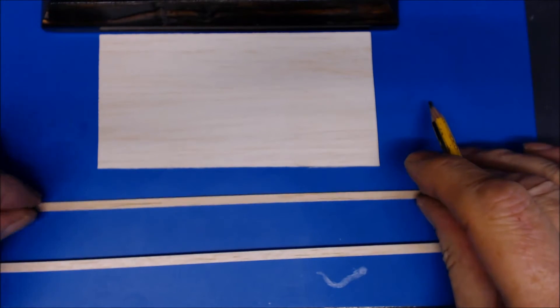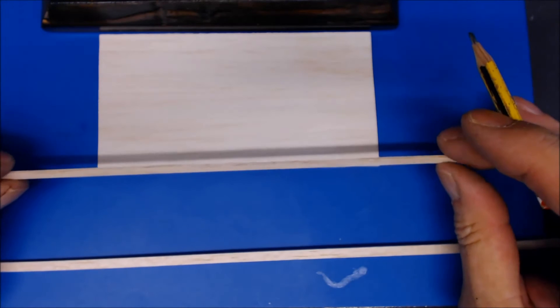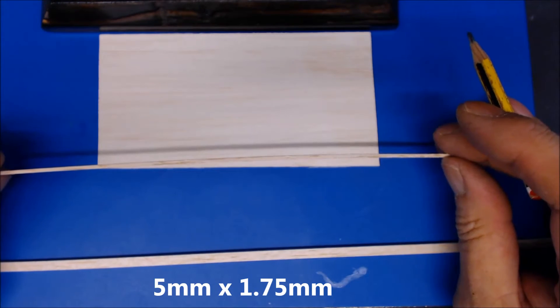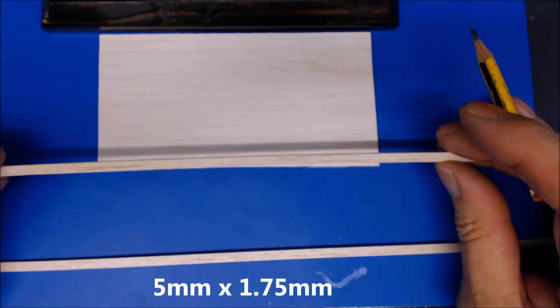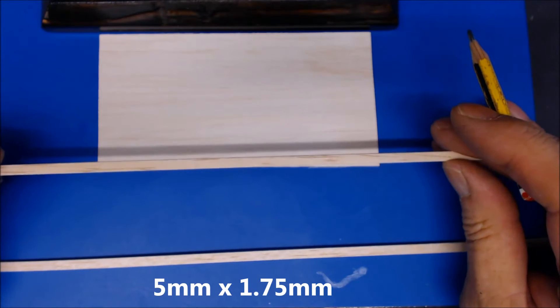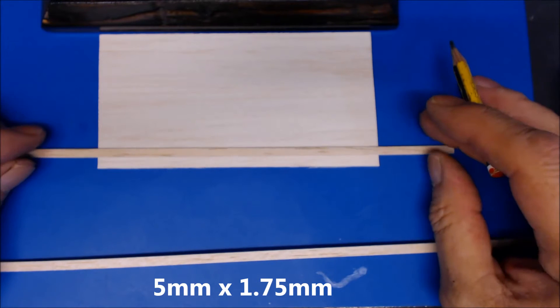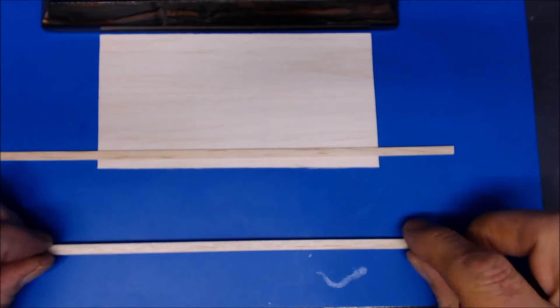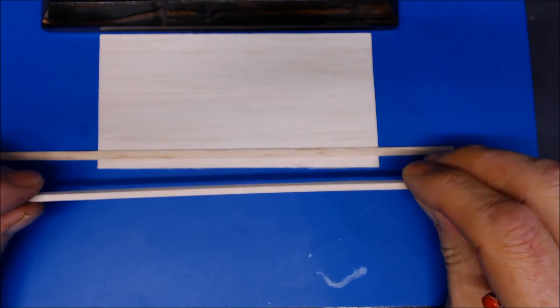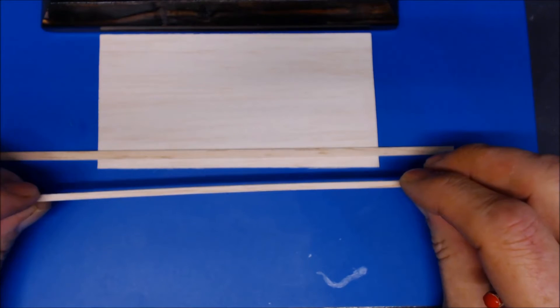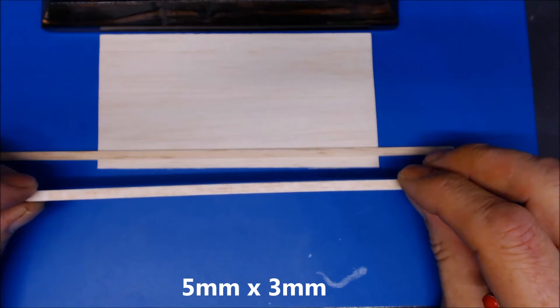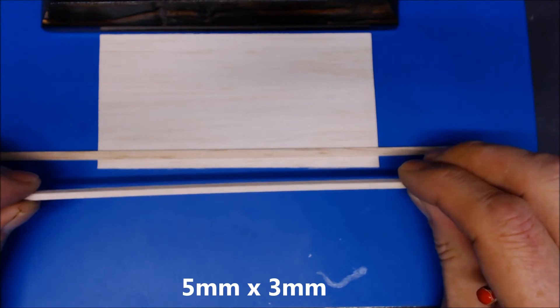The next thing you need is five mil by 1.75 thickness strip, and that is for your back supports to the door. The next piece is for the actual door frame which needs to be thicker - it's still five mil again, five mil by three mil.